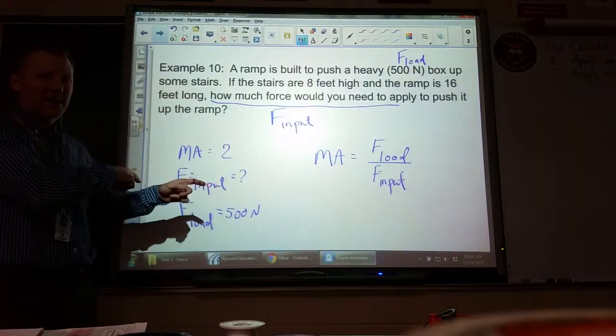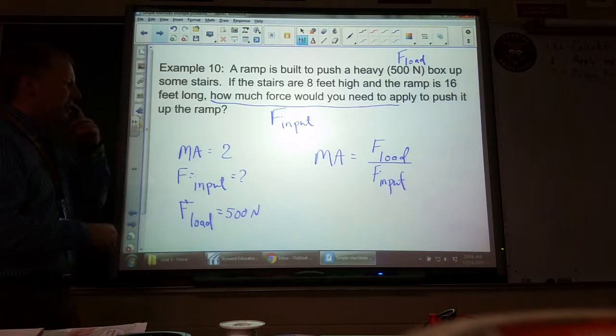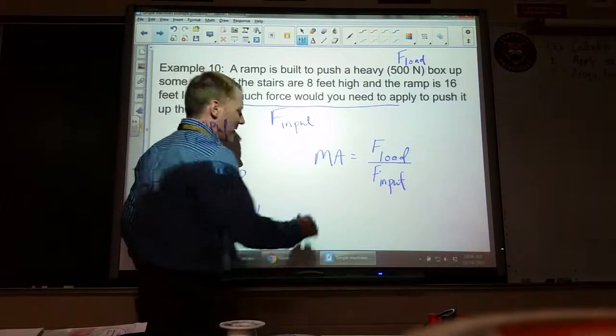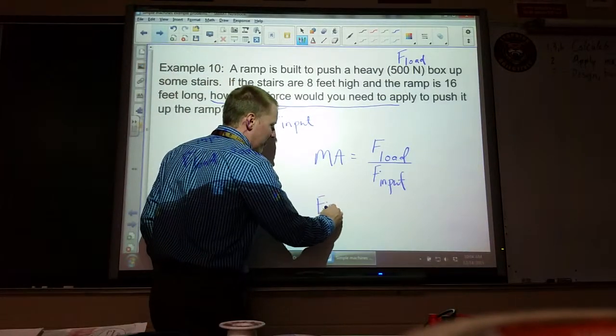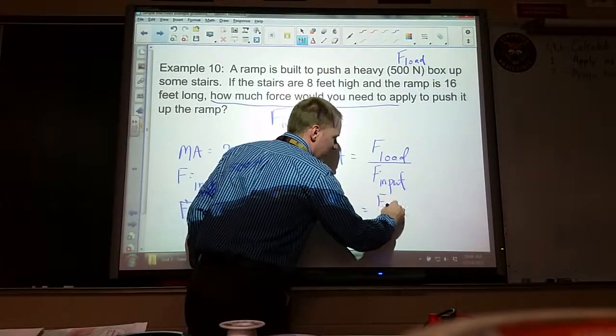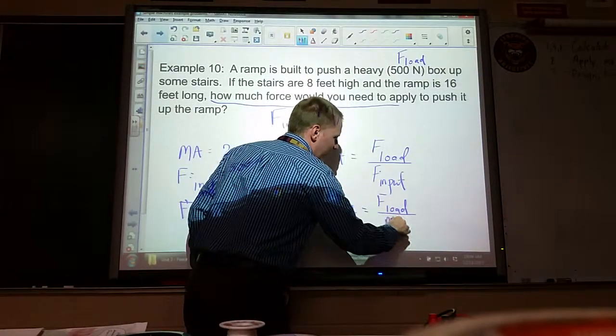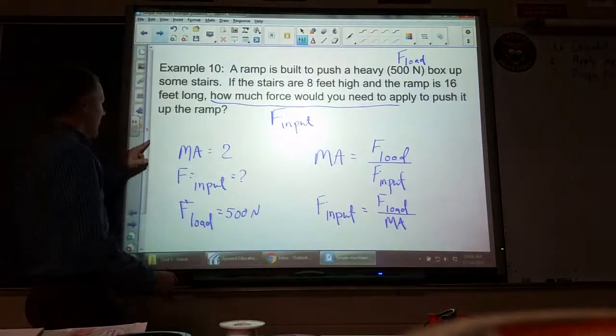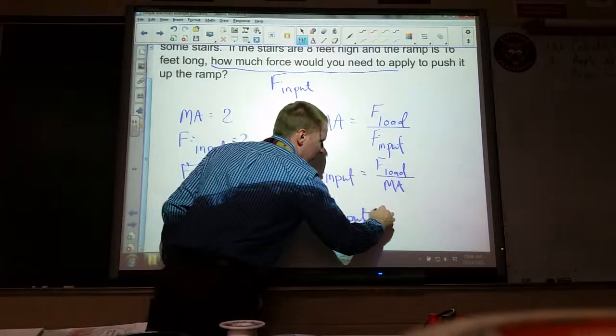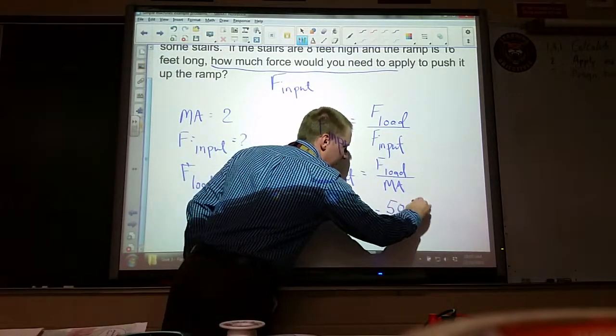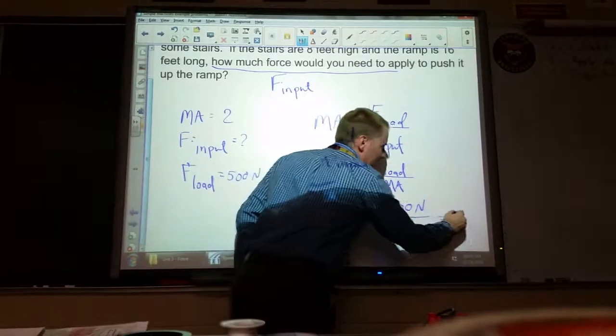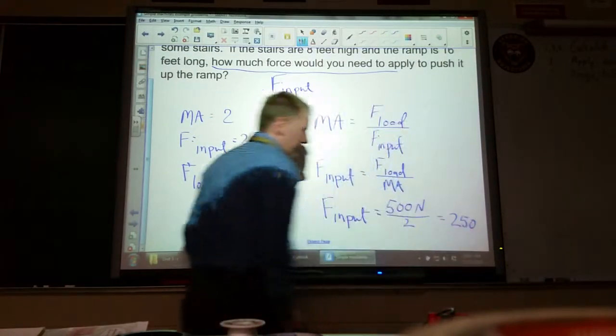So for this one, the load force is 500 newtons. Mechanical advantage is 2. We rearrange that like two examples ago - multiply both sides by F_input to get it on top and divide by mechanical advantage. And we've got those numbers. 500 by 2 is 250 newtons.